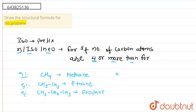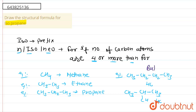The next compound is CH3-CH2-CH2-CH3, which has four carbons. Another example is CH3-CH(CH3)-CH3, which also has four carbons. For four carbons, we use the word root 'but,' and since all single bonds are present, this compound is known as butane.